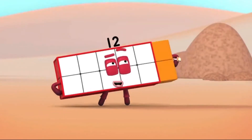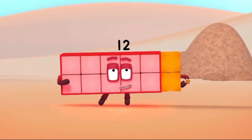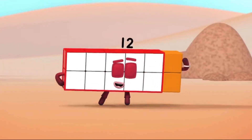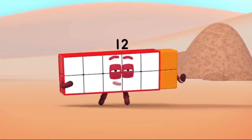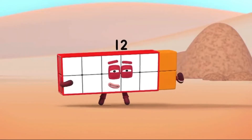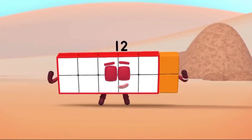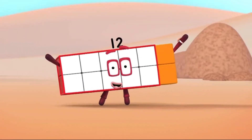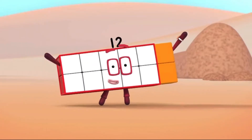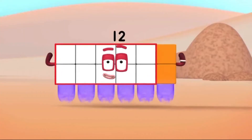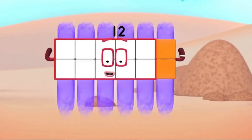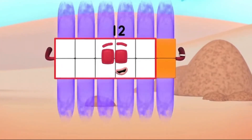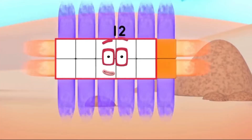I'm rectangular 12. I'm 10 and 2. I make arrays, that's what I do. When I put my blocks in columns and rows, I make an array and my rectangle goes like this. Six! By two!